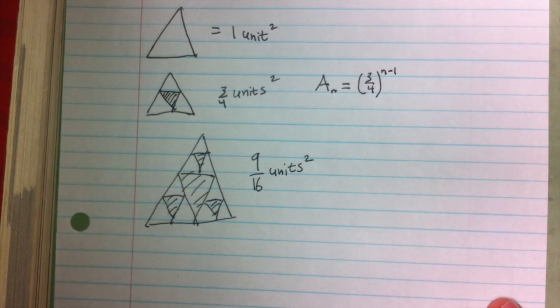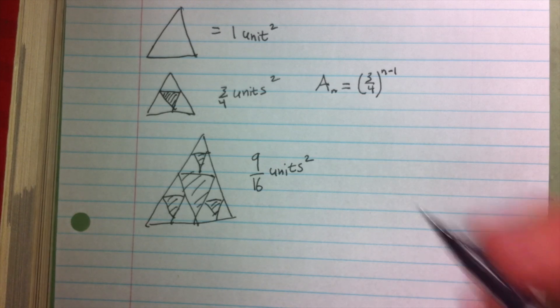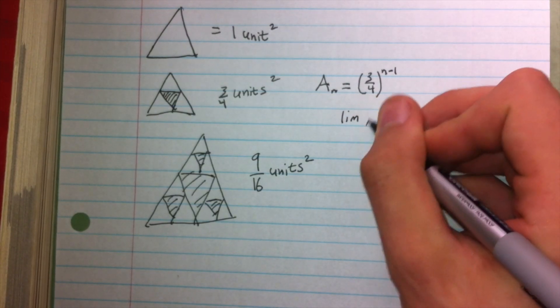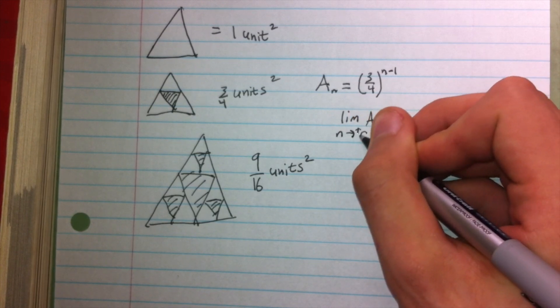Where n is the number of iterations. And so to calculate the area of Sierpinski's Triangle, we just need to figure out what the limit of A sub n is as n approaches positive infinity.